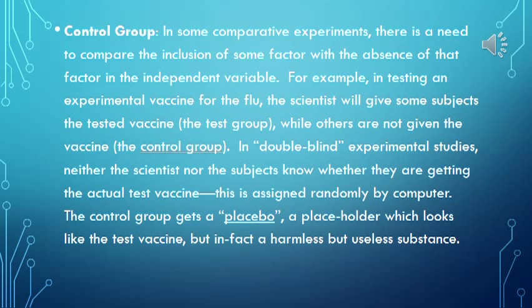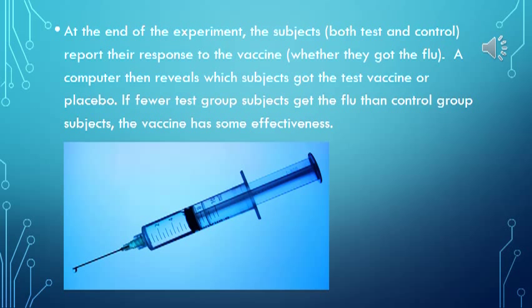In some comparative experiments, there is a need to compare the inclusion of some factor with the absence of that factor. For example, in testing an experimental flu vaccine, scientists give some subjects the tested vaccine — the test group — while others receive no vaccine — the control group. In double-blind studies, neither the scientist nor the subjects know whether they are getting the actual vaccine; this is assigned randomly by computer. The control group gets a placebo that looks like the test vaccine but is a harmless, useless substance. At the end, a computer reveals which subjects got the vaccine or placebo, and if fewer test subjects get the flu than control subjects, the vaccine has some effectiveness.